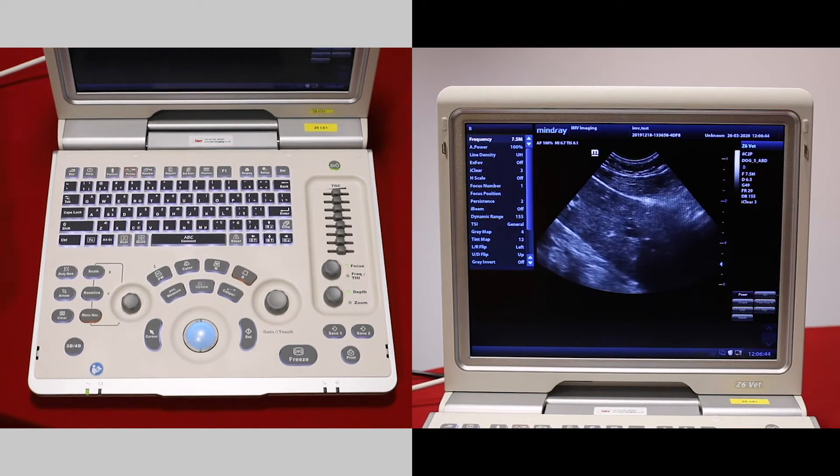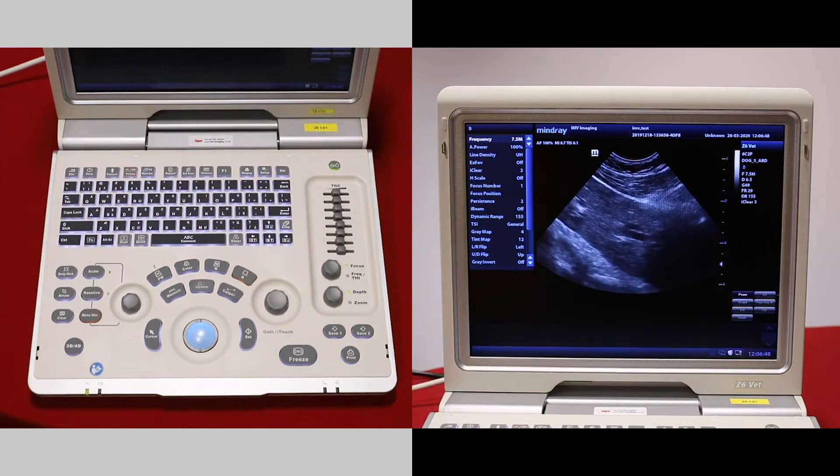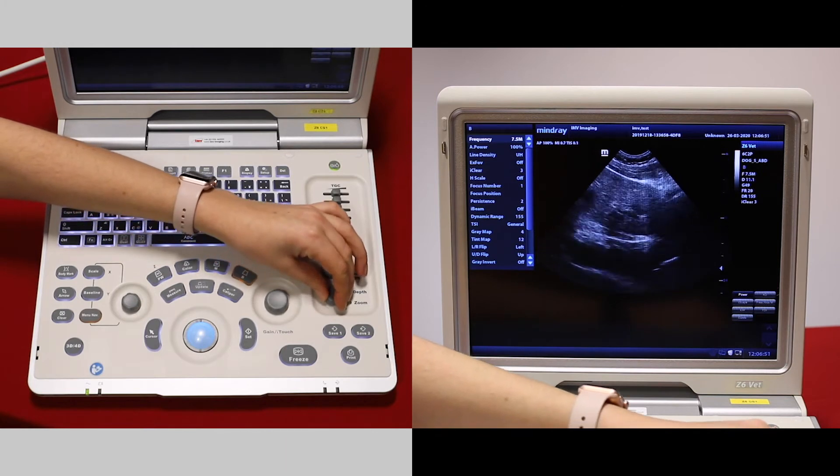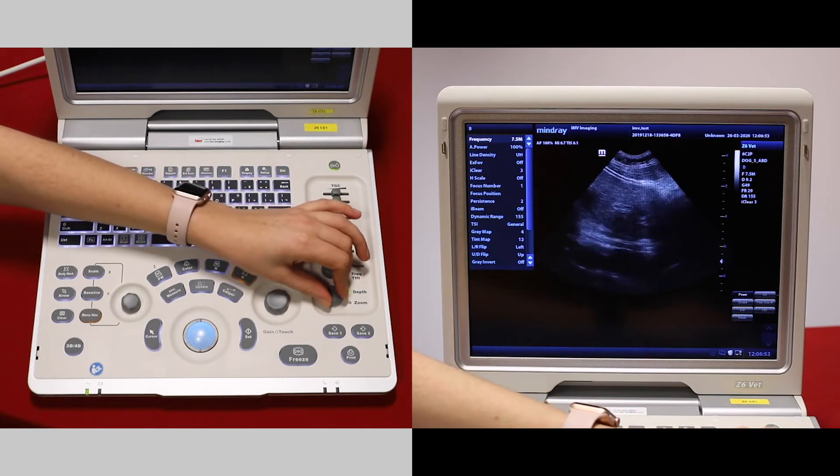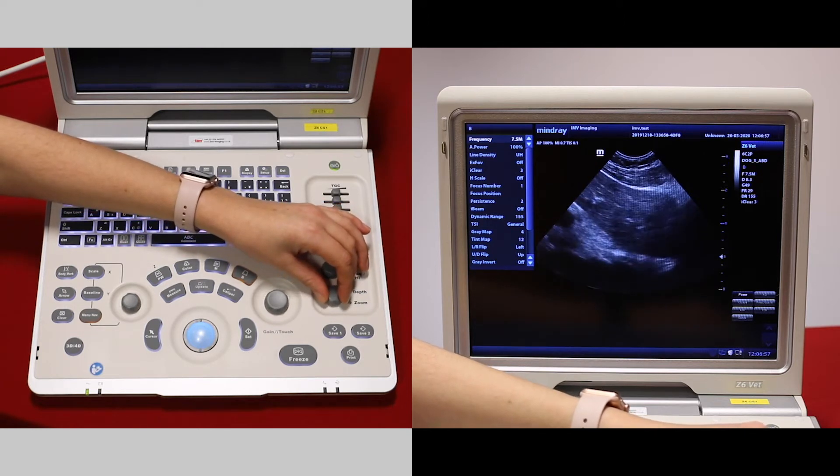To adjust your depth, twiddle this button here. A centimeter scale is on the side of the screen. You can increase or reduce your depth, but make sure that the organ of interest is taking up about three quarters of the screen.